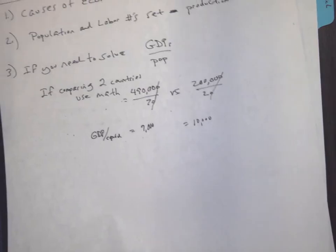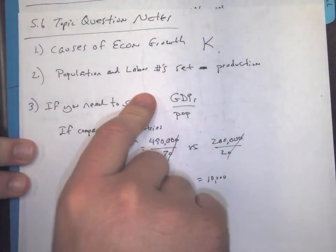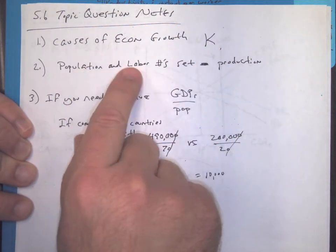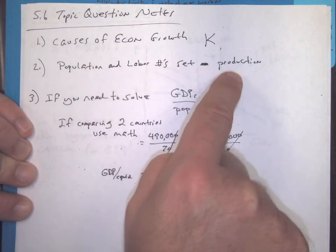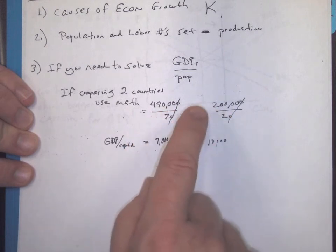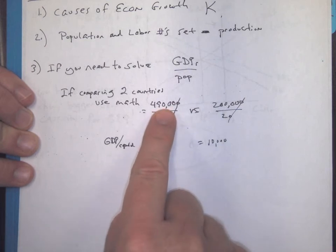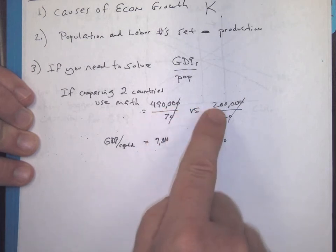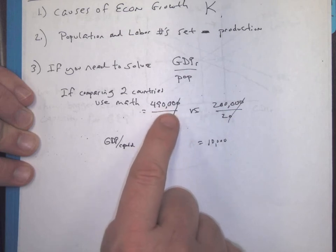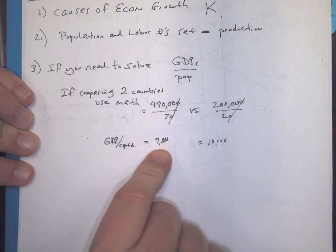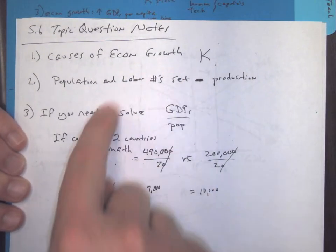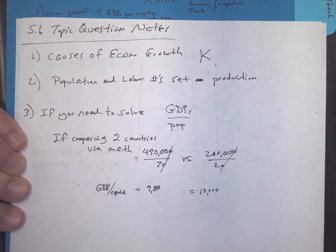Now, when you get to your topic questions for 5.6, the first one is going to be about causes of economic growth. So just think about the things that are in capital. The second one, they're going to give you population and labor numbers that are set in place. If they're set in place, how can we improve production? The third one, they're going to give you two countries, GDP, real GDP, and divide by population. So it looks like this country does a lot better because they make almost half a million in GDP, where this one makes 200,000. But look at the populations, 20 and 70. So if I do this formula right here, I can see that this country that looks like it makes a lot better one to live in actually has $7,000 of real GDP per person. This one has $10,000 per person. So this one actually has a better standard of living. So when you get to your topic questions, this is kind of a rundown or summary of the skills you'll need.